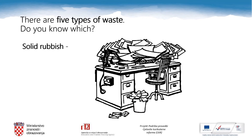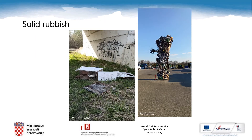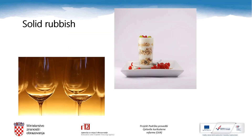Now that you know all five types of waste, let's talk in more detail about them. What would belong to solid rubbish? Yes — paper or card waste. Well done! What else? Yes, tin and metals. Good job! Anything else? Observe the pictures please. Yes — glass and ceramics. Good job!